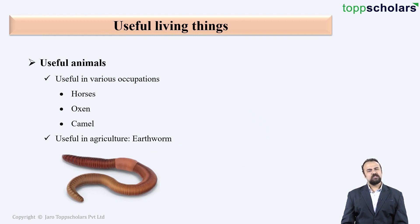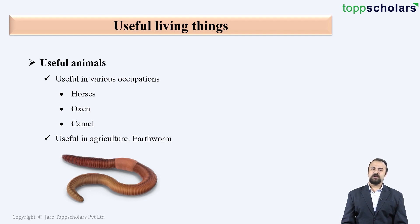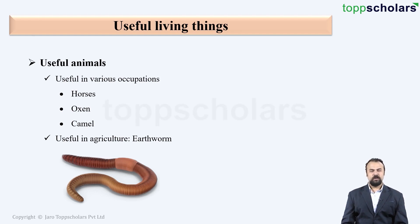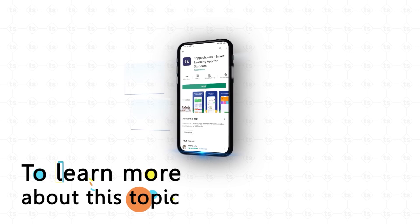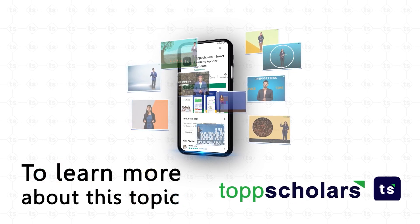There are some animals which are very useful in agriculture. One of the best examples is the earthworm. You must have heard the saying that the earthworm is the farmer's best friend. Do you know the reason? When earthworms move in and out of soil, they make the soil porous. Also, their fecal matter is a very rich fertilizer which increases the fertility of the soil. To learn more about this topic, download the Top Scholars app.